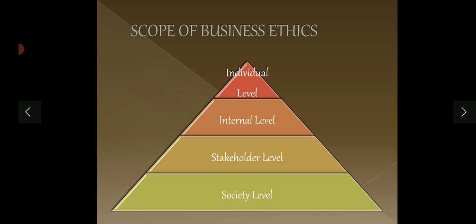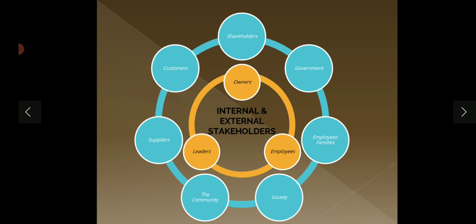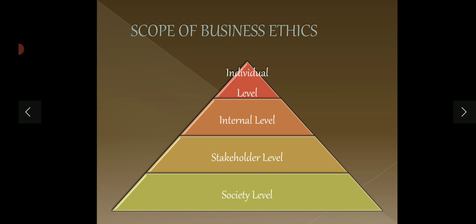Then there are stakeholders — the other people who have an interest in the business: shareholders, government, employees, employees' families, community, suppliers. How do we behave with them? As I told you in the last video, the social responsibilities of the business towards stakeholders — do you follow them? And lastly, society level ethics: do you have business practices that are for society's benefit? So you have to ask yourself these questions.